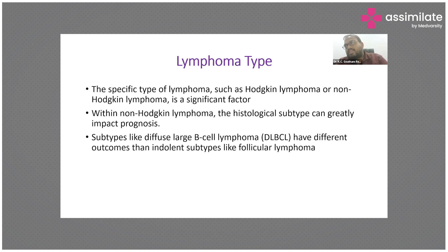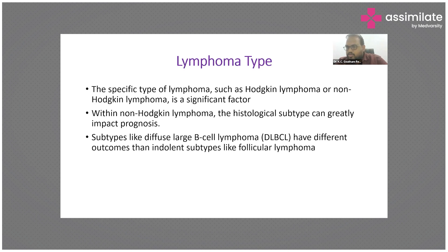About 50 to 60 years ago, the classification was very simple: Hodgkin's lymphoma and Non-Hodgkin's lymphoma. Hodgkin's lymphoma had a good prognosis; Non-Hodgkin's lymphoma had a bad prognosis. The differentiation was made using a light microscope — cells with Reed-Sternberg cells were called Hodgkin's lymphoma, and cells without Reed-Sternberg cells were called Non-Hodgkin's lymphoma. This was the simple classification used 50 years back.